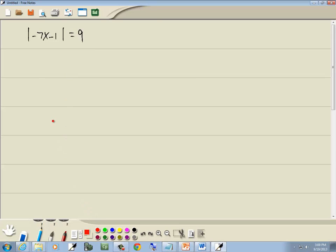Now notice the absolute value is by itself on the left side, so it's in perfect form. What's inside your absolute value is your p, the other side is your q.